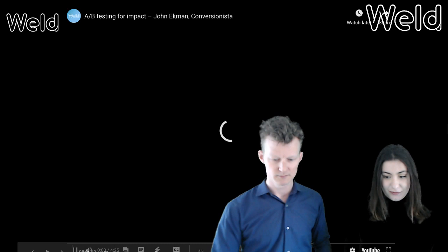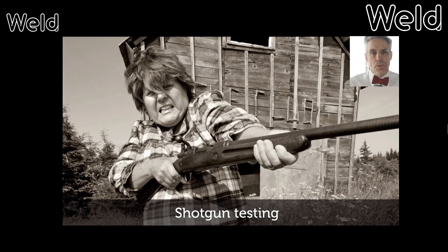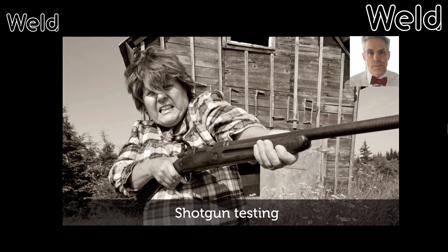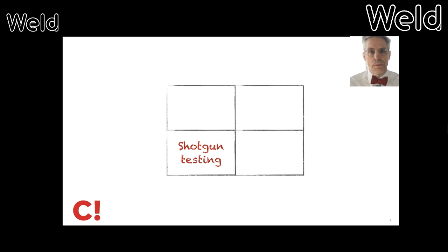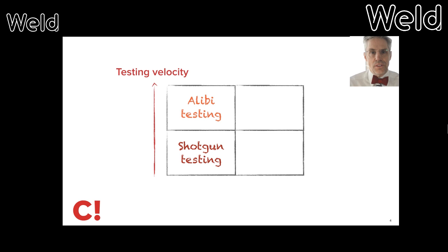Hey, this is John Ekman of Conversionista. I'm going to talk about a process for A/B testing. A lot of people go into A/B testing and start doing what we call shotgun testing — trying a little bit of this, a little bit of that, seeing what sticks. Even if you have the right people, competencies, and tools, you still might fail because you don't have the right process. Some then try to accelerate by investing in testing velocity — bringing up the speed — but this often leads to what we call alibi testing: going through the motions without seeing results, because it becomes a well-oiled machinery for garbage in, garbage out.